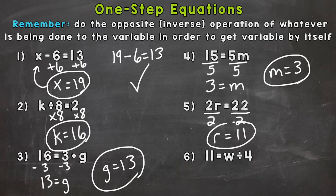11 equals w divided by 4. So we're dividing by 4. The opposite would be multiplying by 4. So let's multiply by 4 to get w by itself. And then whatever we do to one side, we need to do to the other in order to keep everything balanced. So we end up with an answer of 44 for the value of w. So w equals 44.